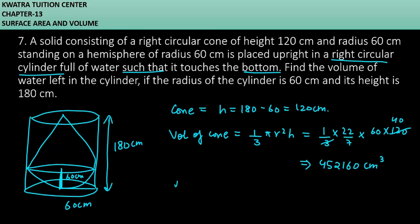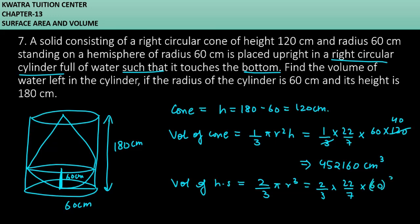Next, we remove the volume of the hemisphere. The formula is (2/3)πr³. So, (2/3) × (22/7) × 60³. The answer to this is also 452,160 cm³.